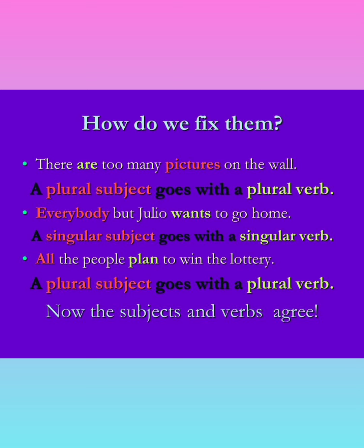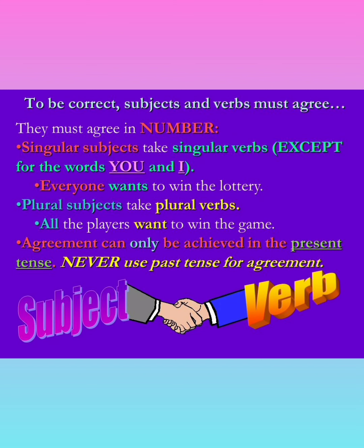The words written with light green color are verbs. Everybody but Julio wants to go home. 'Everybody' — this is the singular subject. Everybody means each and every person, so it goes with a singular verb. A singular subject goes with a singular verb — 'wants' is the singular verb. So to be correct, the subjects and verb must agree. They must agree in number.